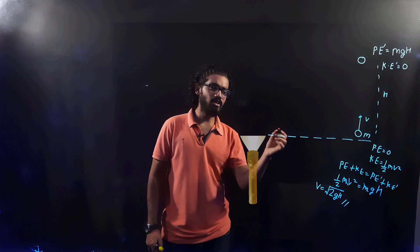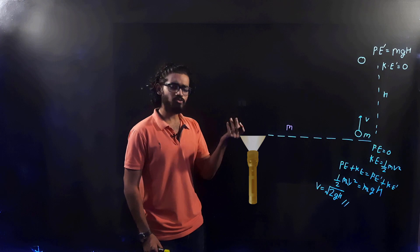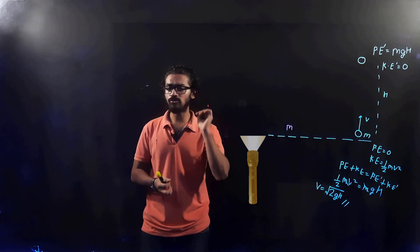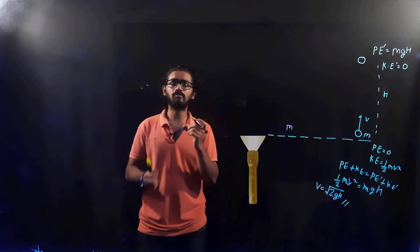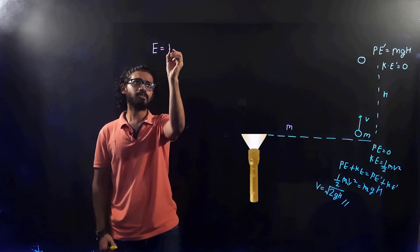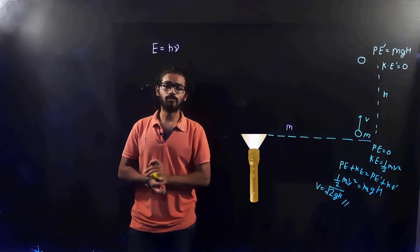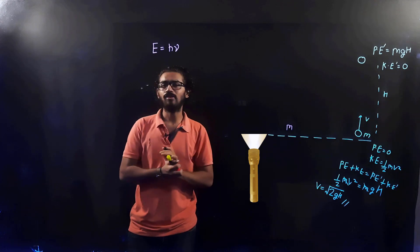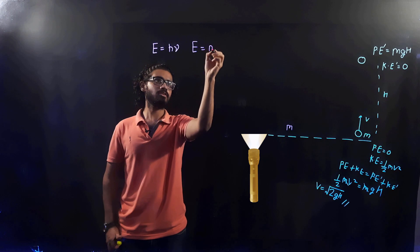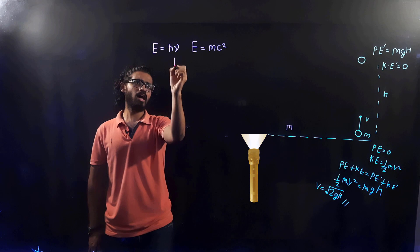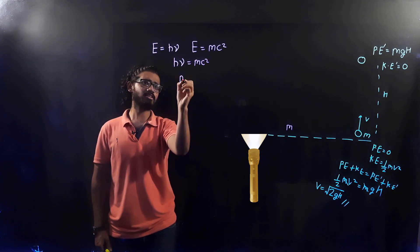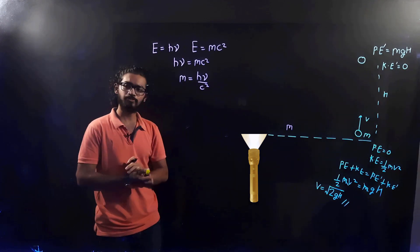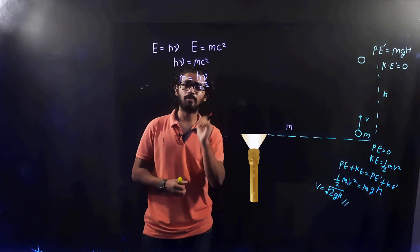Consider a photon here with an associated mass small m. Although a photon is a massless particle, there is a mass associated with it. To calculate this, we use Planck's equation: energy of a photon is E = hμ, where h is Planck's constant and μ is the frequency. Also from Einstein's E = mc², energy equals mass times c squared. Equating these two: hμ = mc², so the associated mass of the photon is m = hμ/c².